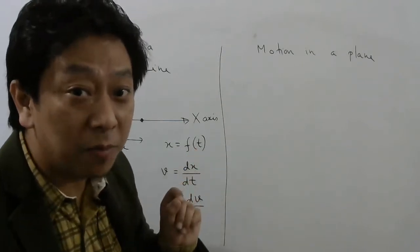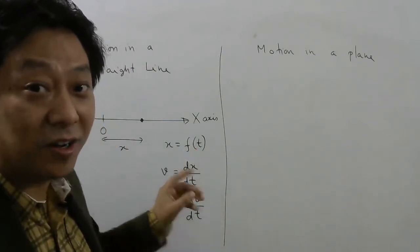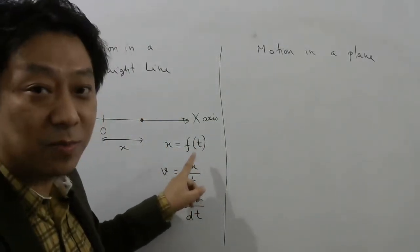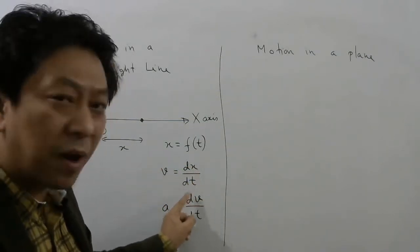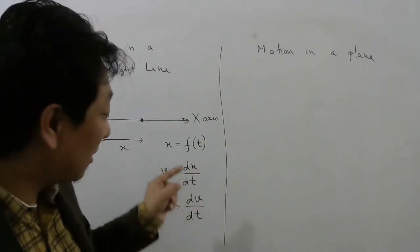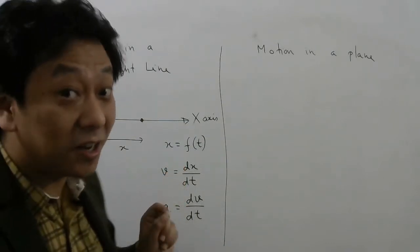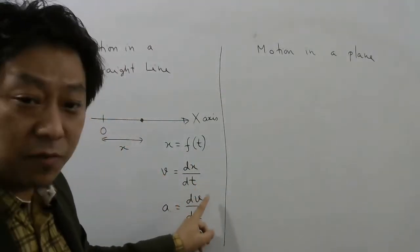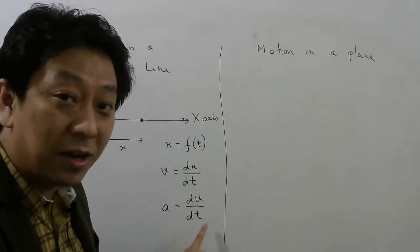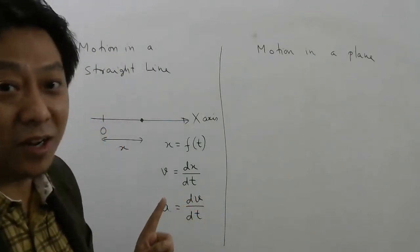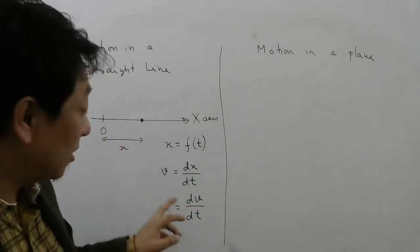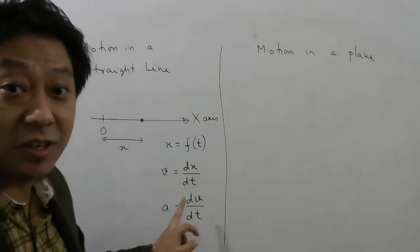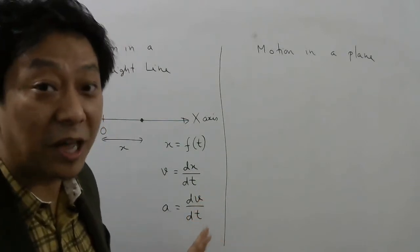If you take a very small displacement dx and divide it by a very small interval of time dt, then dx/dt is what we call instantaneous velocity, as we have learned in differentiation. Similarly, if you take a very small change in velocity and divide it by a small time taken, that is what we call acceleration. Just like velocity is rate of change of position, acceleration is rate of change of velocity with respect to time.